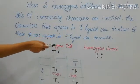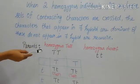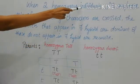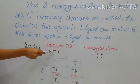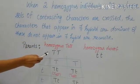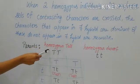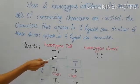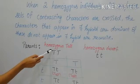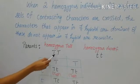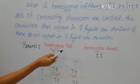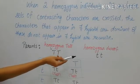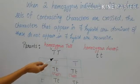Here we can take the example of monohybrid cross. The law states that two homozygous individuals have to cross. Here we are taking tall and dwarf — the contrasting characters. Tall is represented by capital T capital T, since it is homozygous dominant, and small t small t is homozygous recessive.